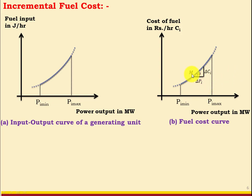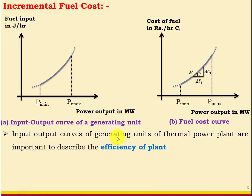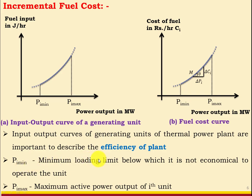We want to take the slope of this cost curve. Even though the curve is non-linear, for a small part we can assume it is linear. The slope is calculated as tan θ = ΔCi / ΔPi, i.e., increase in cost of fuel divided by increase in power. The slope is change in y divided by change in x. Input-output curves of generating units are important to describe the efficiency of the plant. Pi_min is the minimum loading limit below which it is not economical to operate the unit; Pi_max is the maximum active power output of the ith unit.